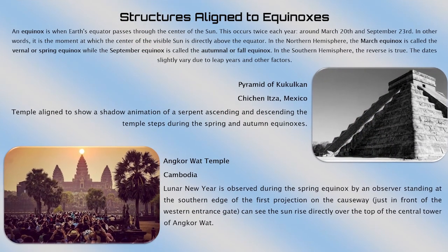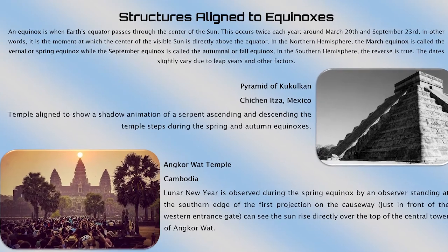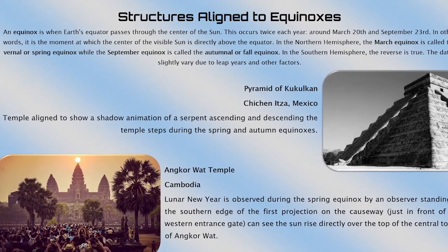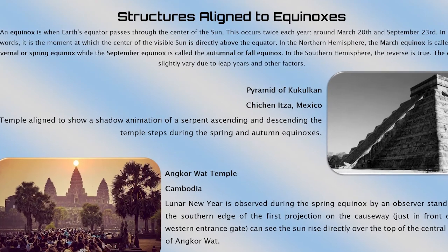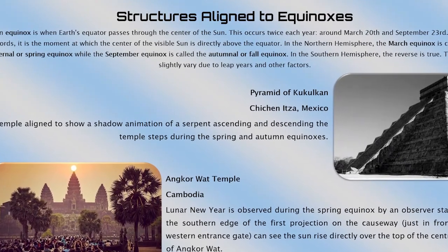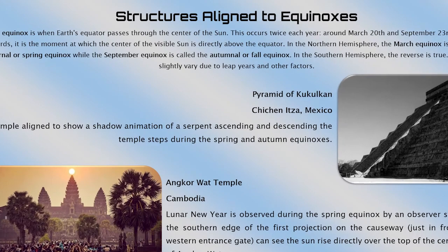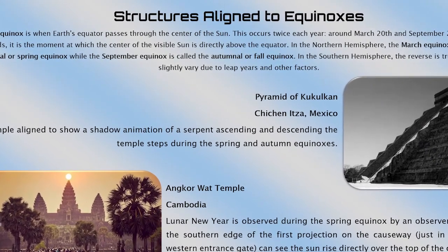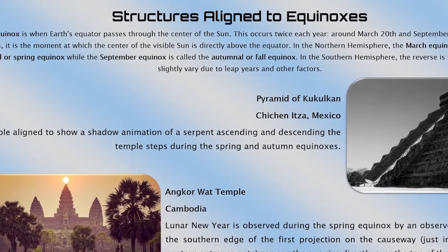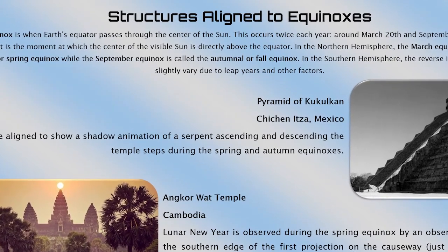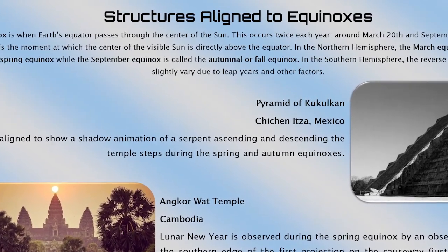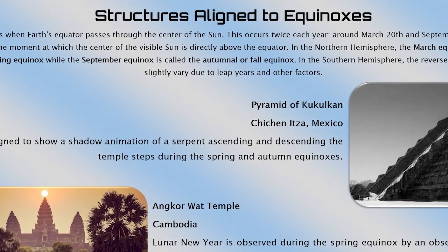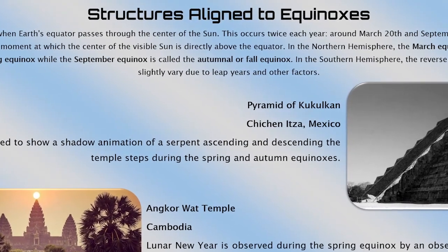Now we're going to go over structures aligned to equinoxes. An equinox is when Earth's equator passes through the center of the sun, occurring twice each year around March 20th and September 23rd. In the northern hemisphere, the March equinox is called the vernal or spring equinox, while the September equinox is called the autumnal or fall equinox. In the southern hemisphere the reverse is true.